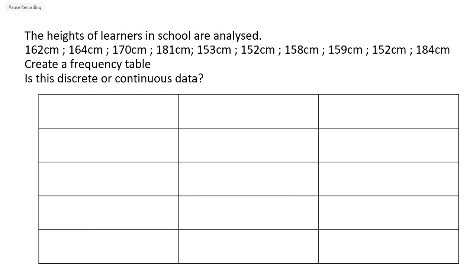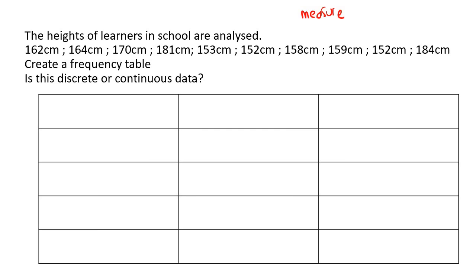Here we have the heights of learners in a school analyzed, with the different heights given in centimeters. Create a frequency table. Would you count or would you measure when looking at the heights of learners? You would measure — you'd take a tape measure and go measure their height. So this is going to be continuous data.